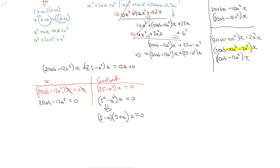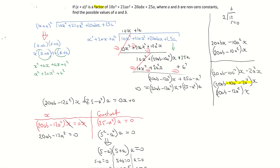I'm going to solve for a from the three factors. So: 5 minus a equals 0 gives a equals 5; 5 plus a equals 0 gives a equals negative 5; and a equals 0. Scrolling back up, the question says a and b are non-zero constants, so I'm going to eliminate the zero solution. The question asks for possible values — there can be more than one — so we keep a equals 5 and a equals negative 5.